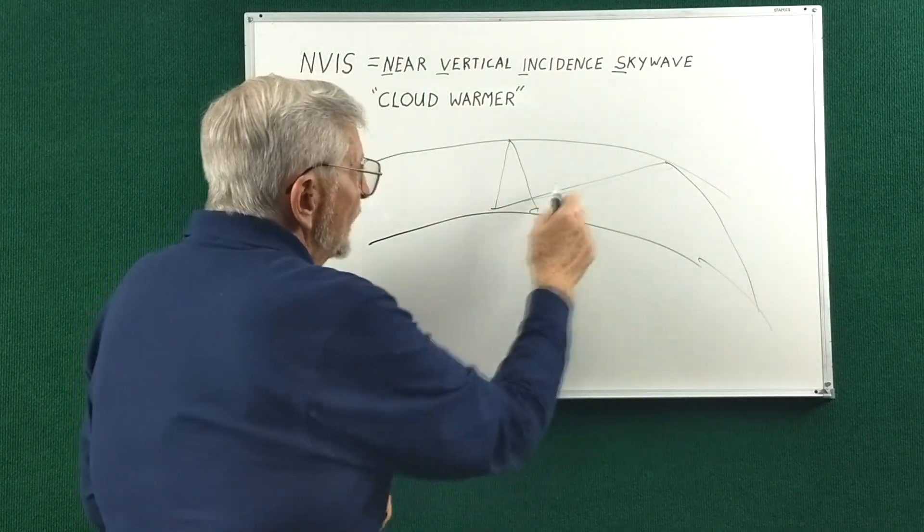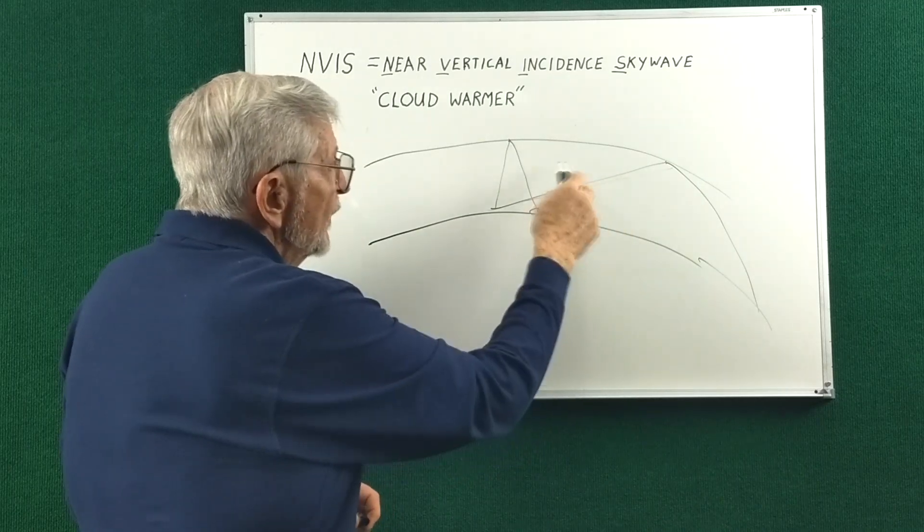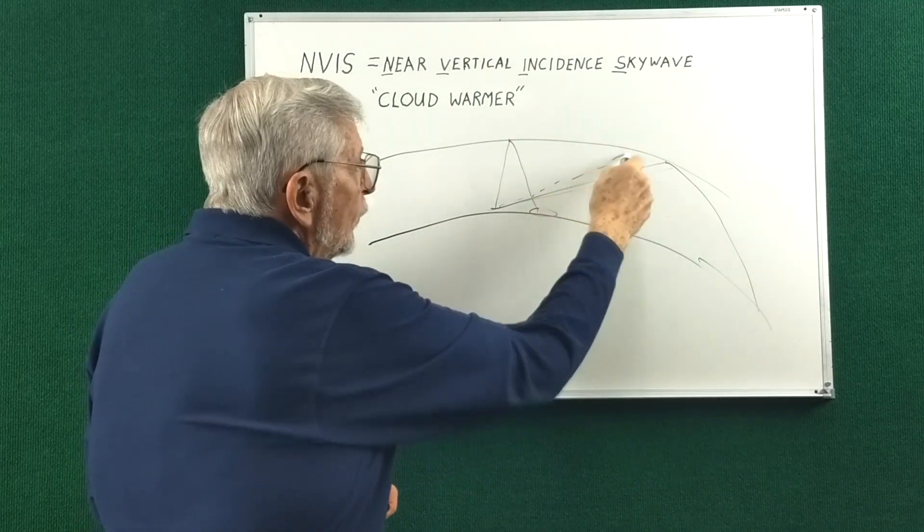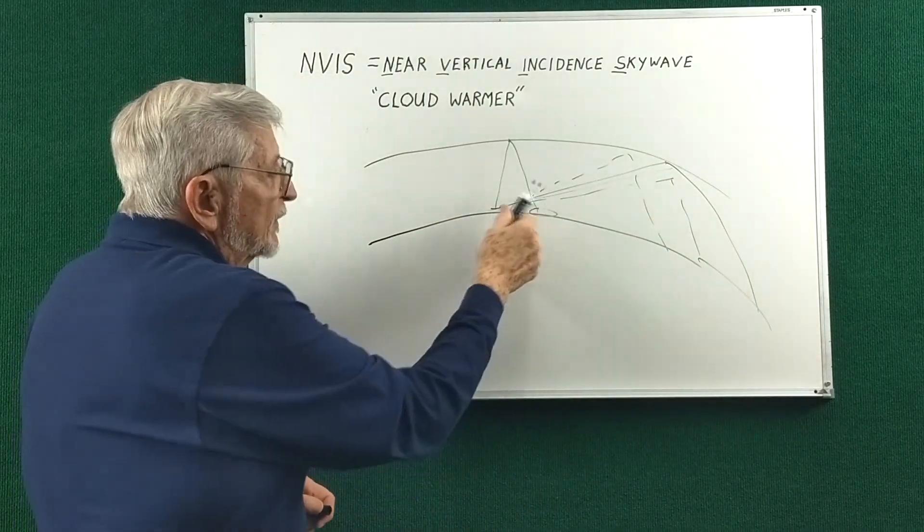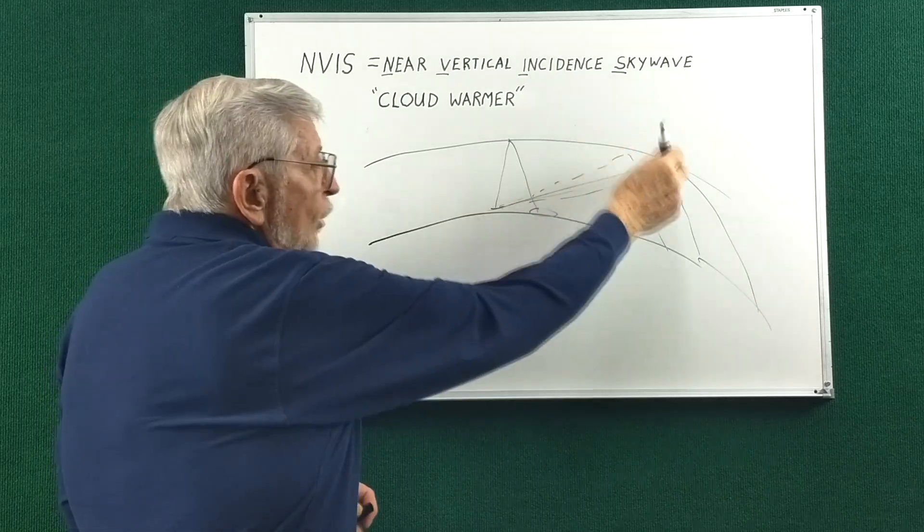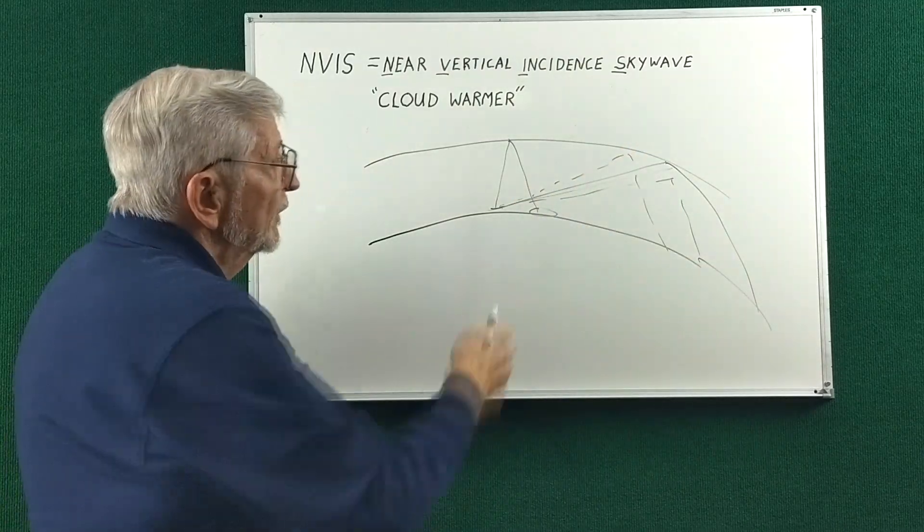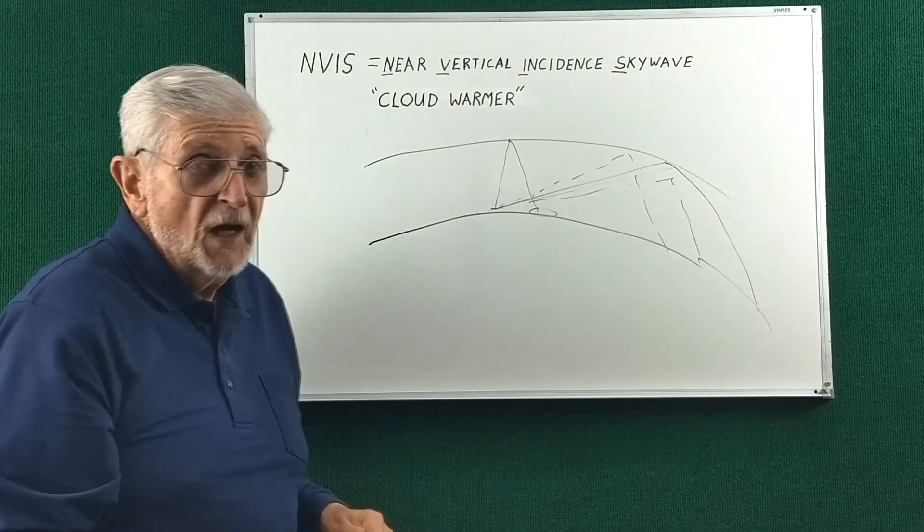This is where the majority of the RF is. Of course, there's always multiple paths. But typically you look at the strongest lobe of the antenna and call that the takeoff angle.